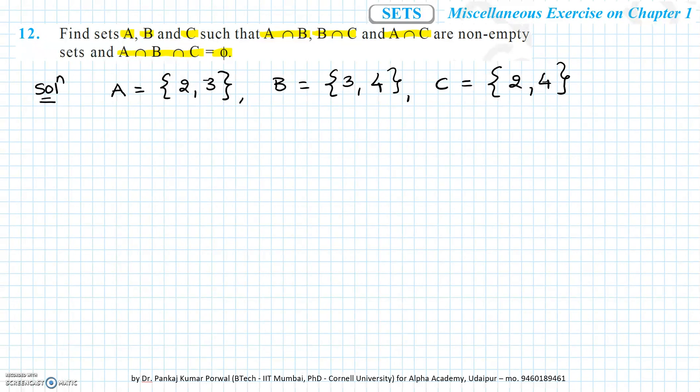Now we can find all the intersections. So A intersection B is equals to the set containing number 3. B intersection C is equals to the set containing number 4. And A intersection C is the set containing number 2.